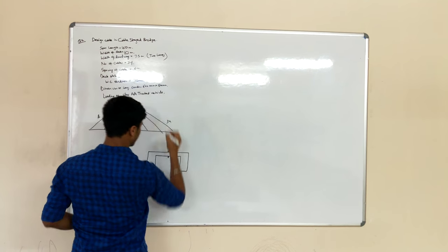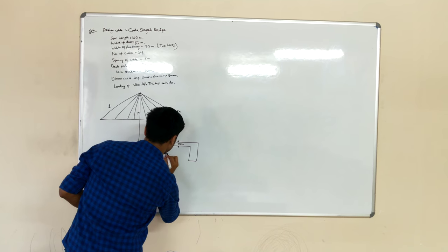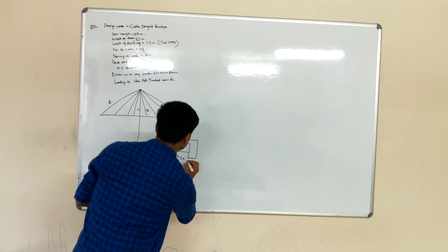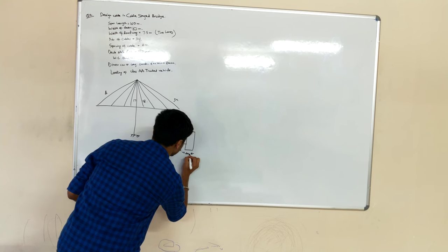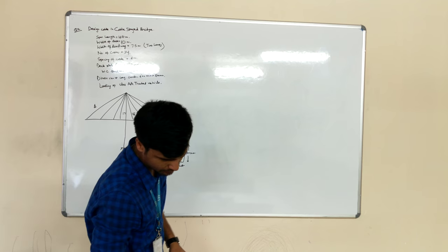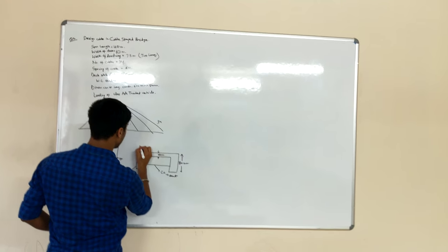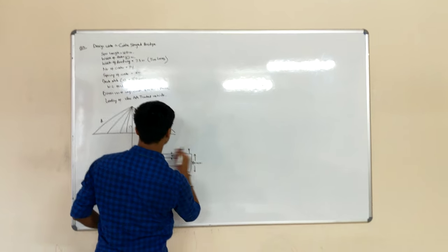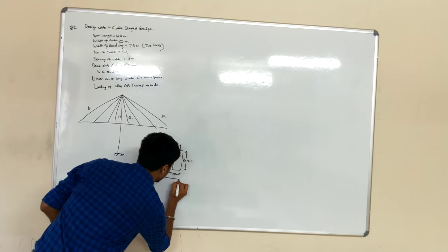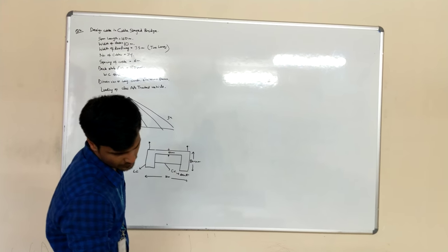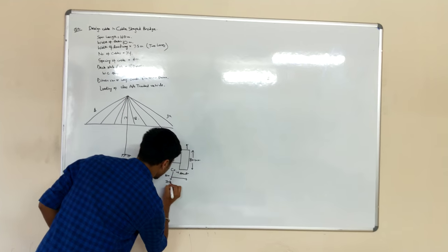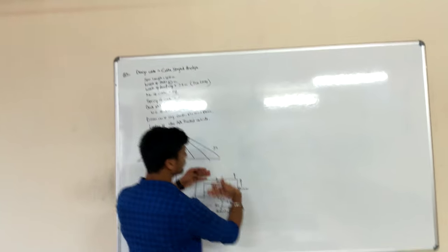This is our deck slab, with thickness 180mm as given in the question. This is the cross girder and this is the longitudinal girder. On both sides we have girders, and the width of deck is 10m from here to here. The cross girders are at increments of 3m — 3m, 3m, 3m like this.